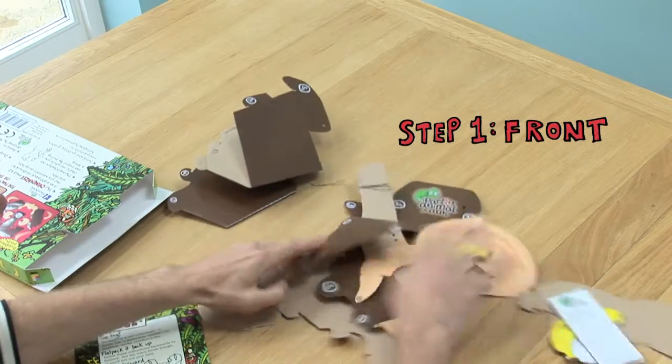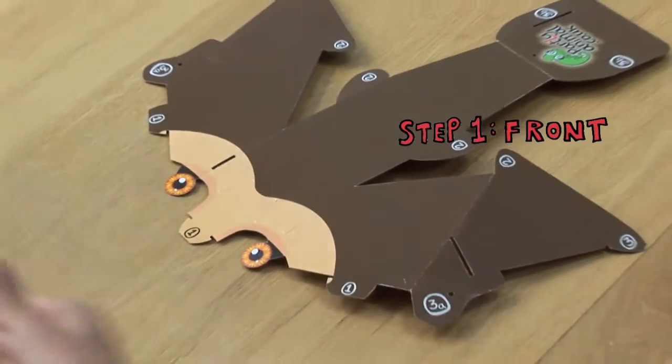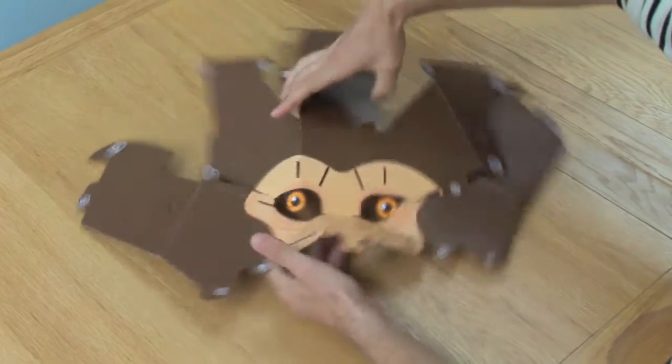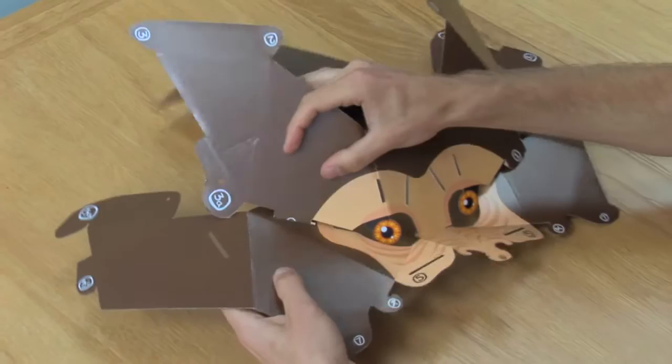Firstly, take the two biggest pieces, the one that looks like an anchor and the one that looks like a boomerang. Insert the three tabs marked one into the slots on the inside curve of the boomerang.